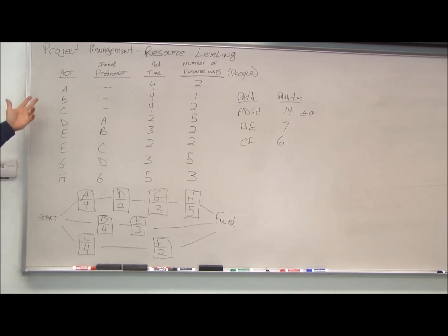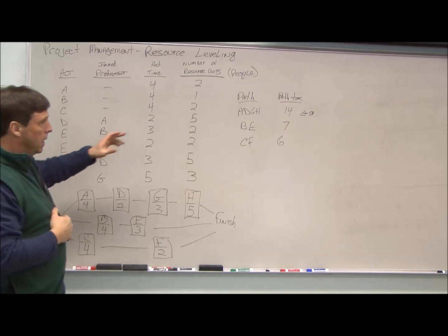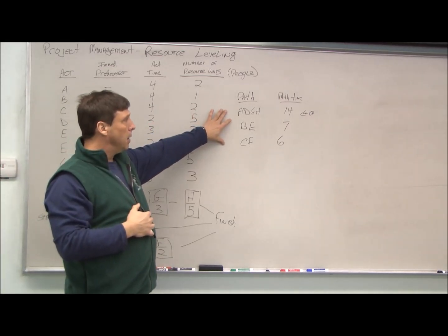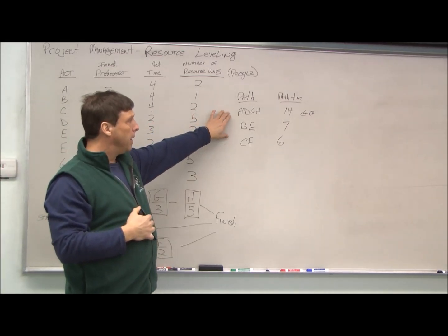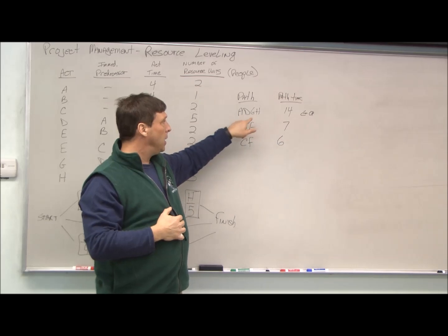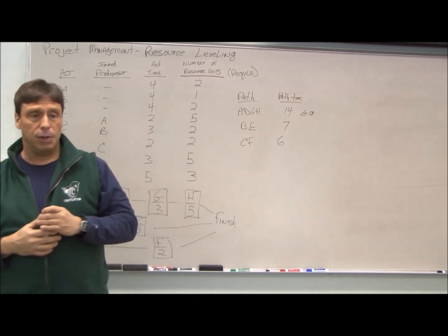This is what the diagram looks like. I've given you the idea that the critical path is 14 weeks for A, D, G, and H. Now let's take a look at leveling.